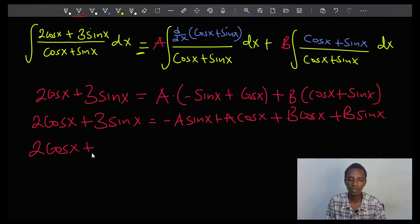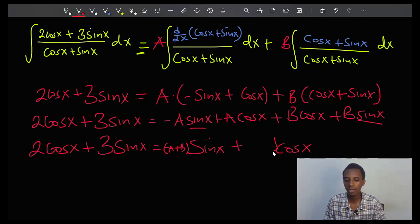So 2cos x plus 3sin x equals... if I collect sin x together, I'll have B minus A, or if you want you can write negative A plus B. And if I collect the cos x together, I have A plus B. This is equivalent.